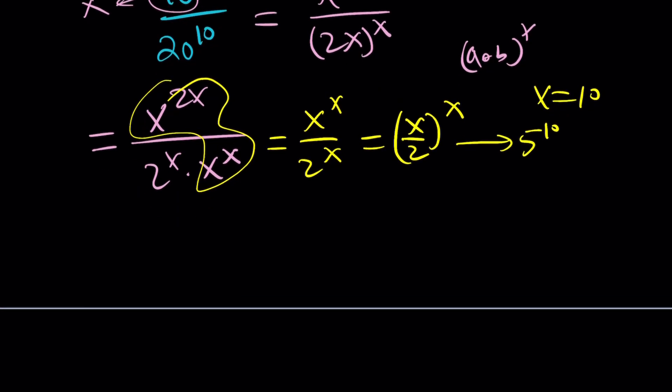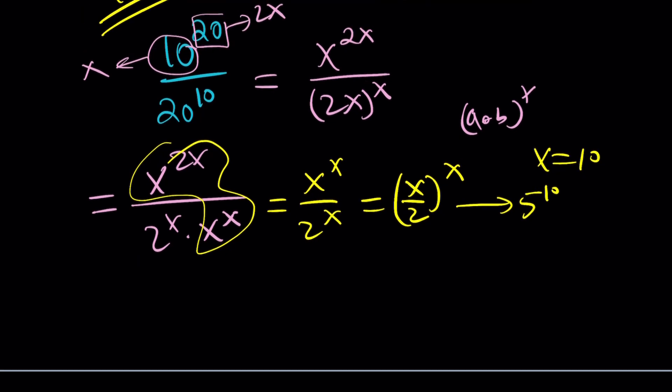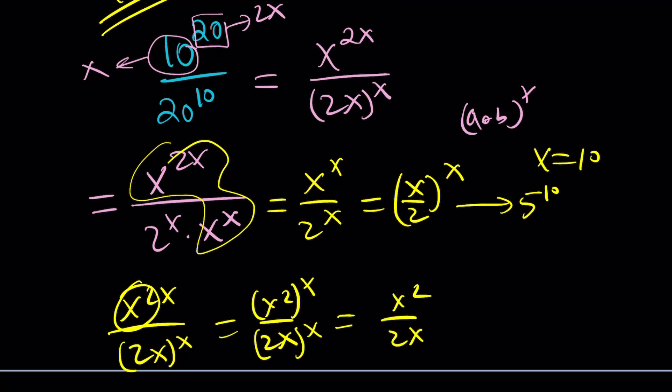Another way to approach it, obviously, would be, we have x to the 2x divided by 2x to the x. We can kind of write this as x squared over 2x, because this would be x squared to the x and 2x to the x. And now I can write it as x squared over 2x, and then all of that is to the x. But x squared and x cancels out. x over 2 to the power of x with x equals 10. This is 5 to the 10th again. And whatever you do, you're going to arrive at the same answer.